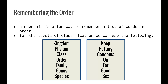So how can we remember the order? A mnemonic is a fun way to remember a list of words in order. For the levels of classification we need to remember them in order: kingdom, phylum, class, order, family, genus, and species. One way to remember these is 'Keep putting condoms on for good sex.' It's probably a little bit more M-rated than one you may have heard — 'King Phil calls ordinary families generous and special' — probably not as exciting. Hopefully it'll help you to remember the order.